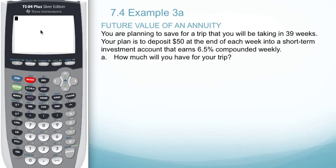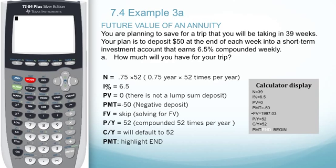Example 3A will look at determining the future value of an annuity using the TVM solver. You are planning to save for a trip that you'll be taking in 39 weeks. Your plan is to deposit $50 at the end of each week into a short-term investment account that earns 6.5% compounded weekly. How much will you have for your trip? Let's go into the TVM solver.